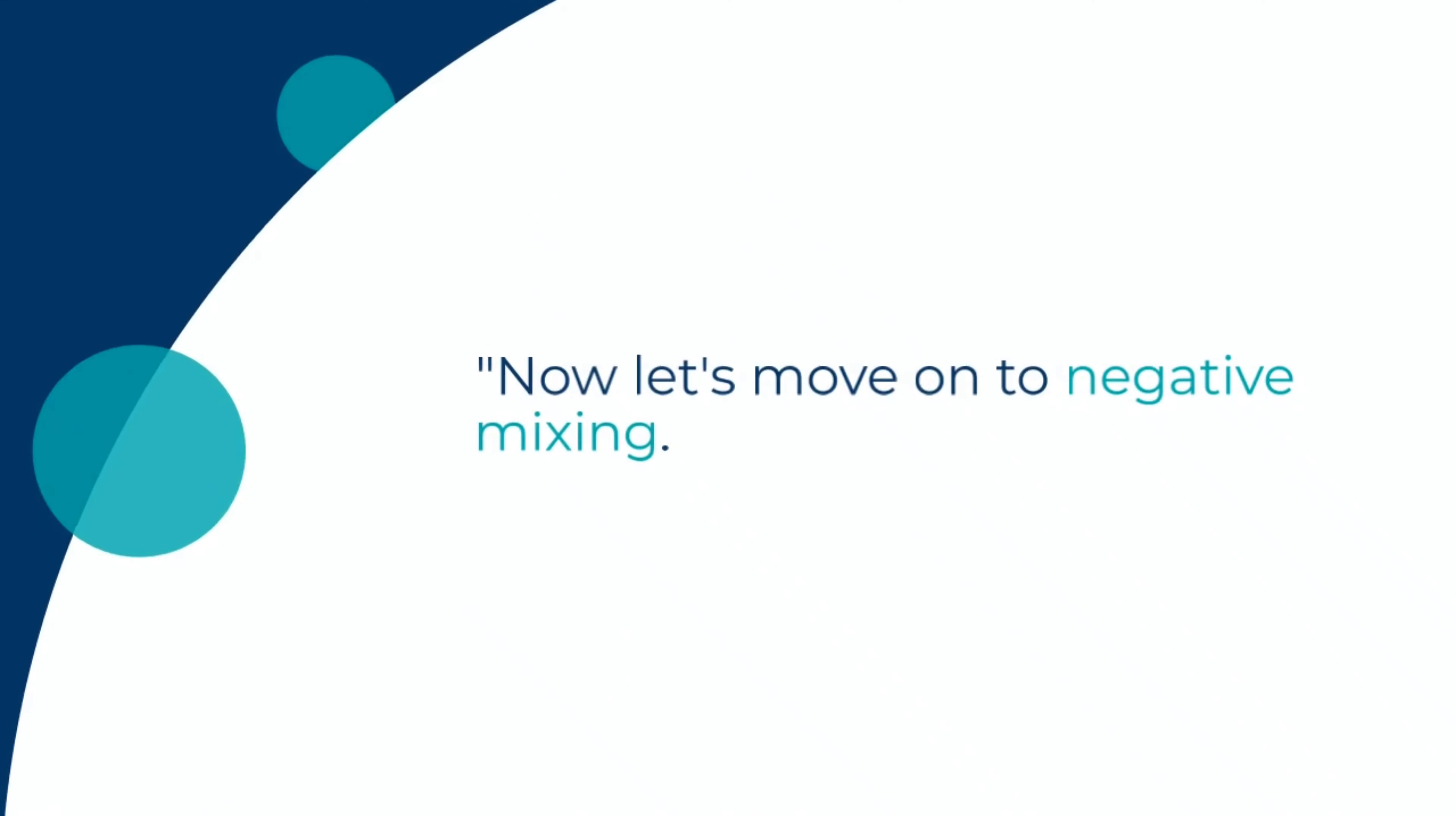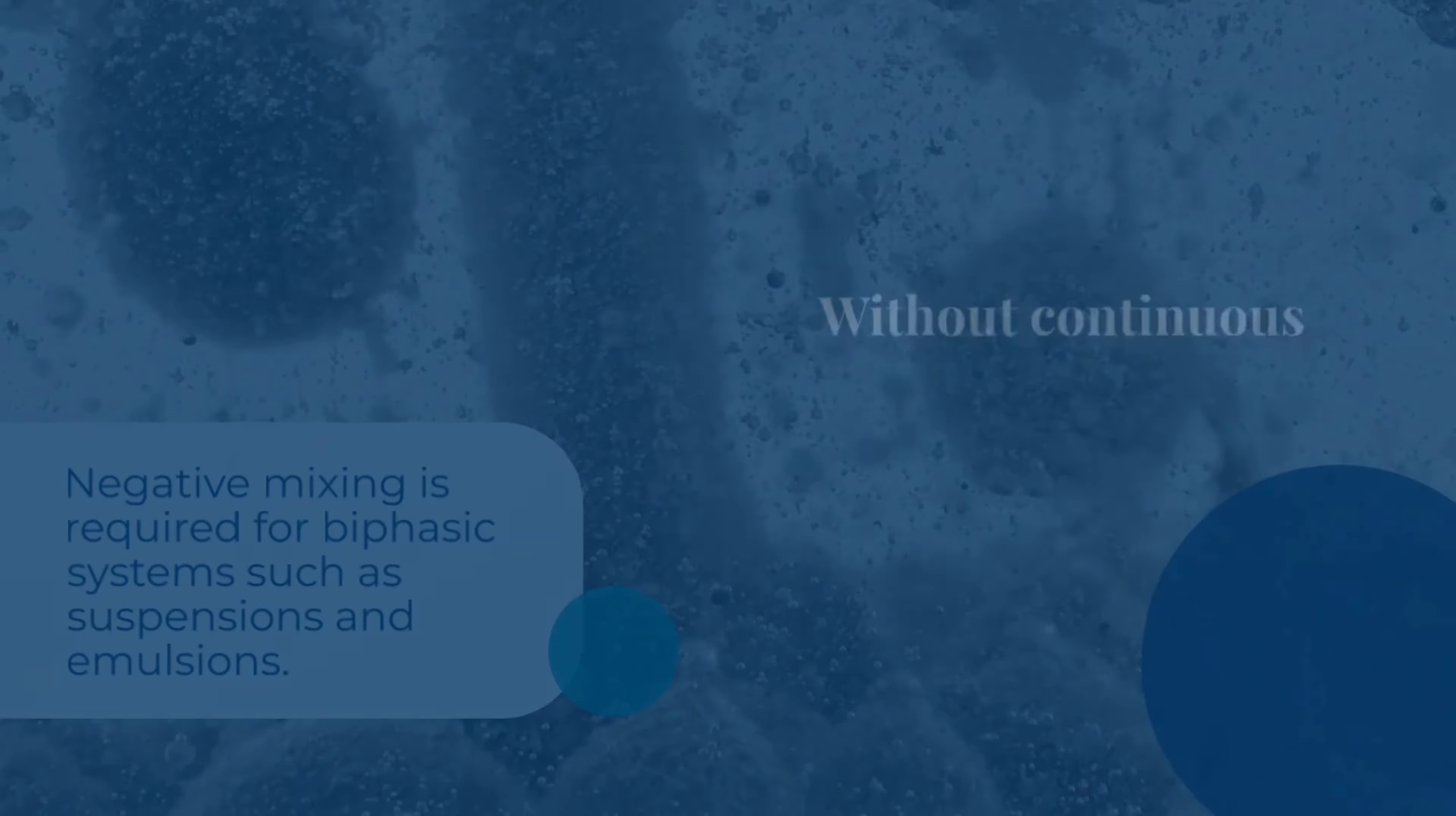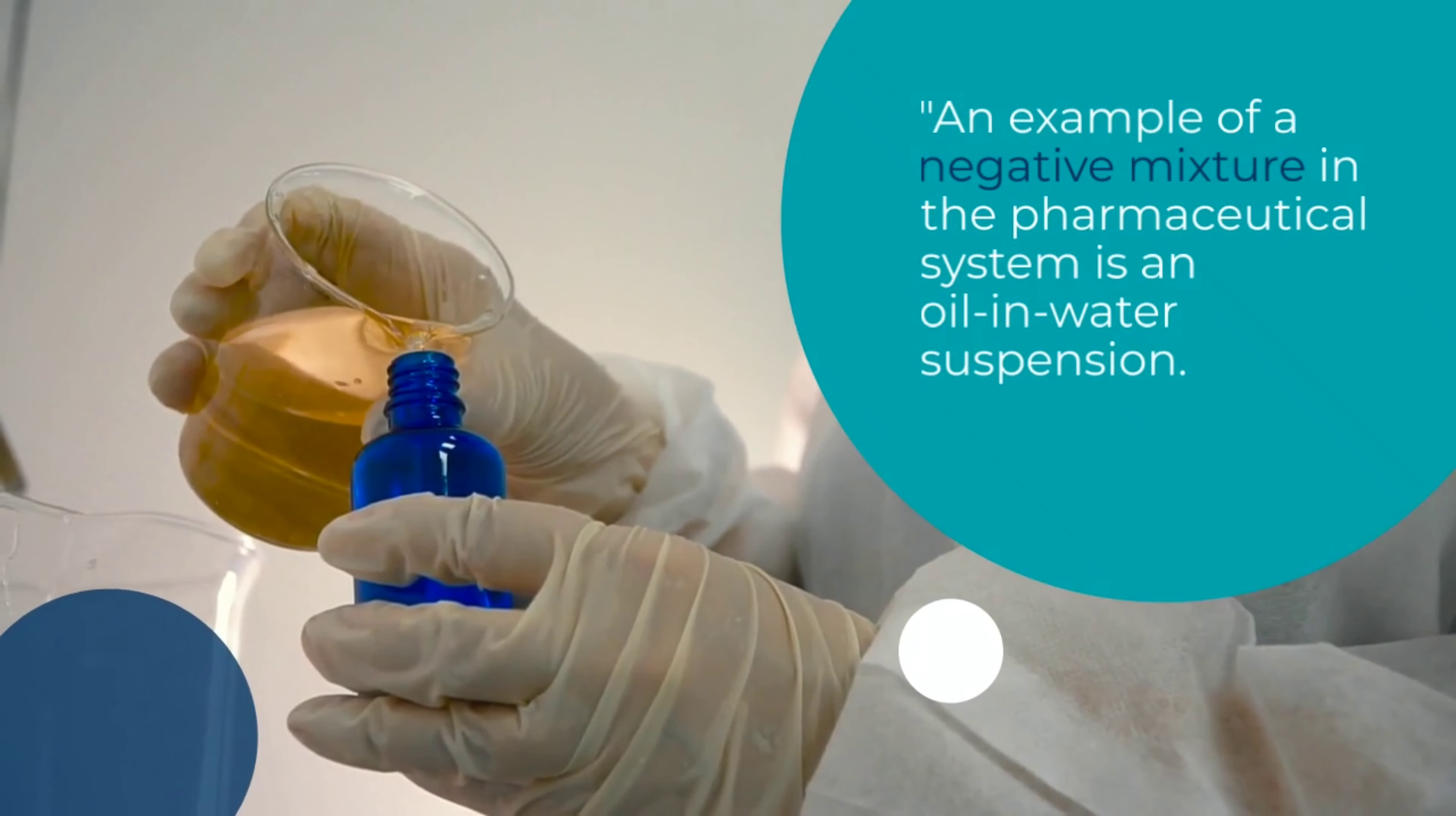Now let's move on to negative mixing. Negative mixing is required for biphasic system such as suspension and emulsions. Without continuous energy input, negative mixtures tend to separate out quickly. An example of a negative mixture in the pharmaceutical system is an oil-in-water suspension.